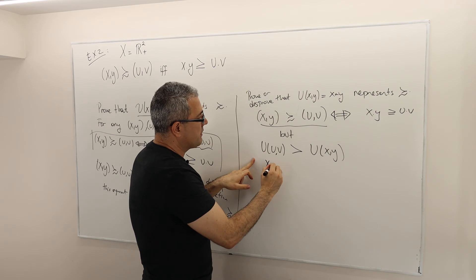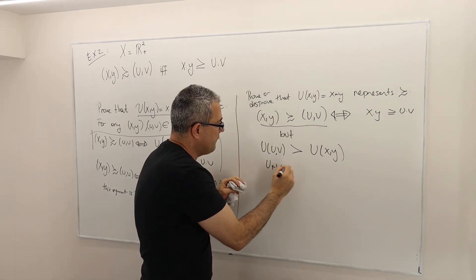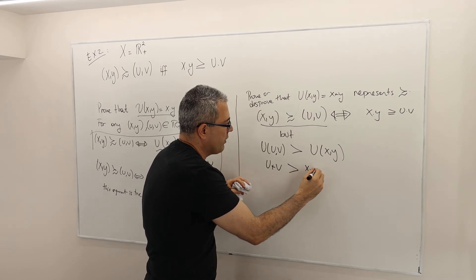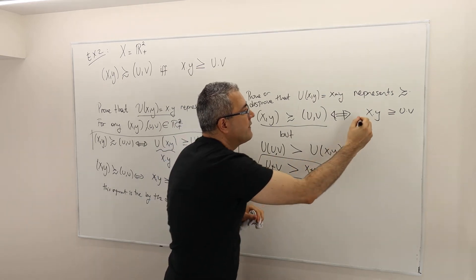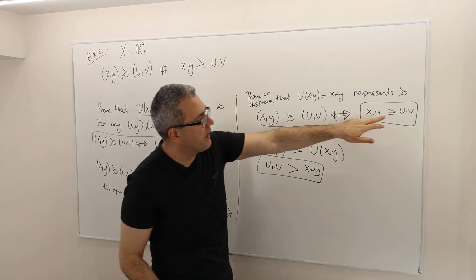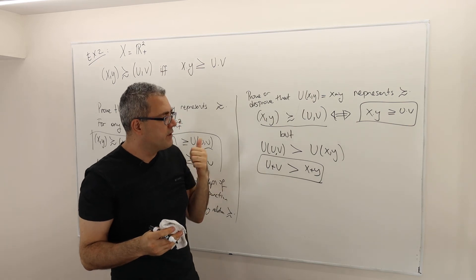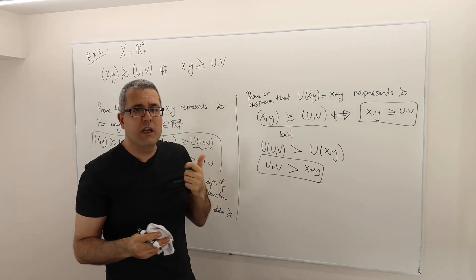What do I need? When I have X plus—sorry, this is U plus V strictly greater than X plus Y. So I need XY, UV where when I multiply them, XY is greater than UV, but when I add them up, UV is greater than XY.